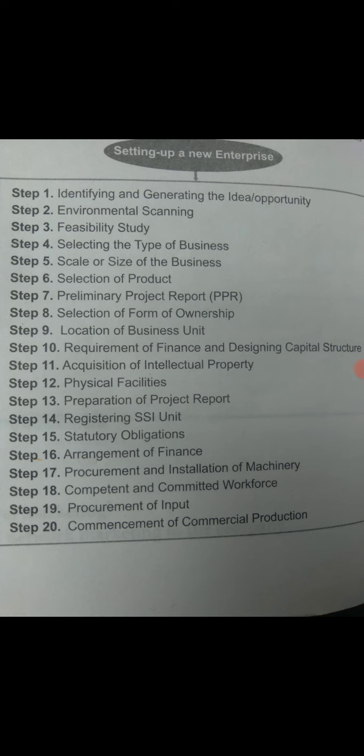The ninth step is the location of the business unit. It is said that there are three important decisions before starting a business — and those are location, location, and location. Location is a very important factor. When deciding on location, the entrepreneur considers availability of raw materials, infrastructure, banking facilities, labor availability, communication, and government incentives available at that particular location.